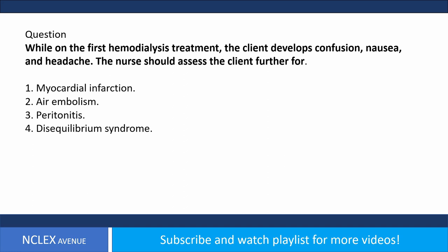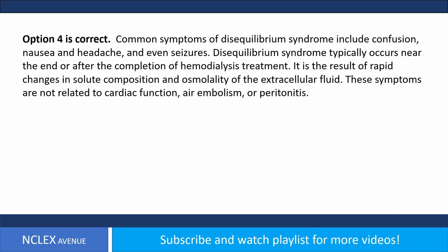Question. While on the first hemodialysis treatment, the client develops confusion, nausea, and headache. The nurse should assess the client further for: 1. Myocardial infarction. 2. Air embolism. 3. Peritonitis. 4. Disequilibrium syndrome. Answer. Option 4 is correct. Common symptoms of disequilibrium syndrome include confusion, nausea, headache, and even seizures. It typically occurs near the end or after completion of hemodialysis and results from rapid changes in solute composition and osmolality of the extracellular fluid. These symptoms are not related to cardiac function, air embolism, or peritonitis.